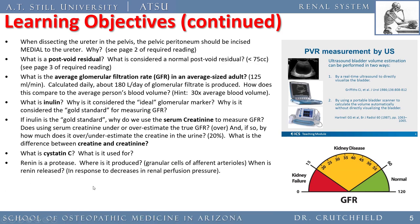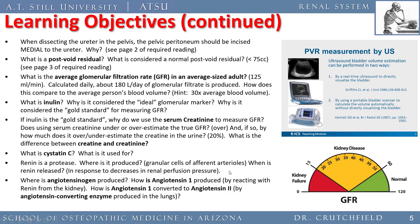Renin is a protease produced in the granular cells of the afferent arteriole. It is released in response to decreases in renal artery perfusion pressure — when blood flow to the kidney drops, the kidney responds by producing renin. Angiotensin I is produced by reacting with renin from the kidney, and is then converted to angiotensin II by the angiotensin converting enzyme (ACE), which is located in the lungs.